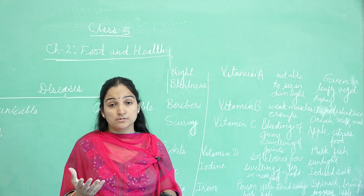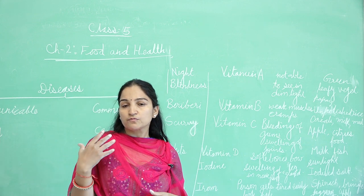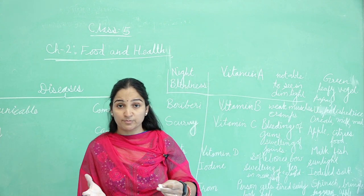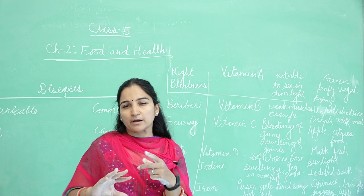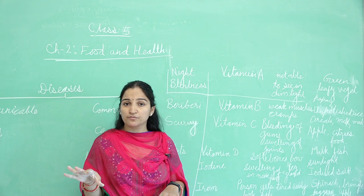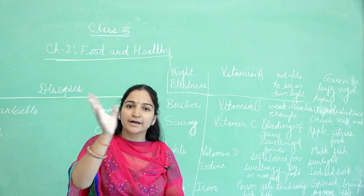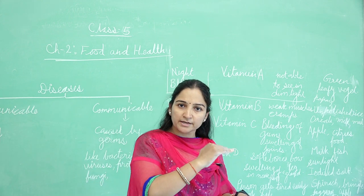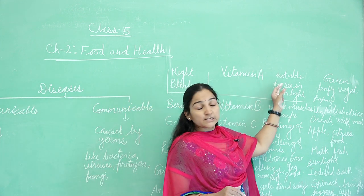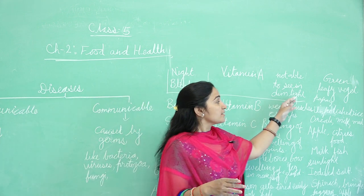Night blindness occurs in a person who has a deficiency of Vitamin A. If someone's food lacks Vitamin A, that person gets night blindness. The symptom — by which we can identify that the person has this disease — is that in dim light, such as in the early morning and at sunset time, their vision becomes weak. They cannot see properly in dim light. That is the symptom of night blindness caused by Vitamin A deficiency.